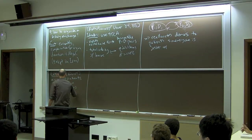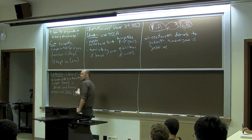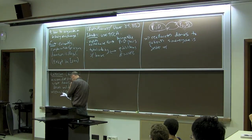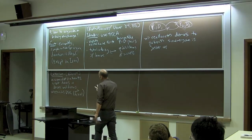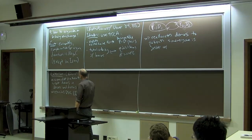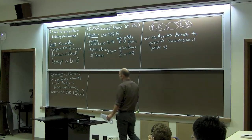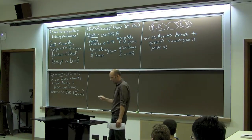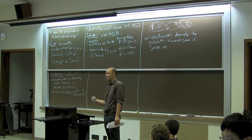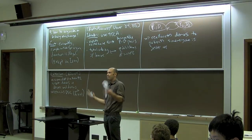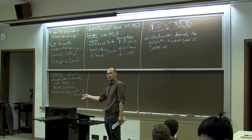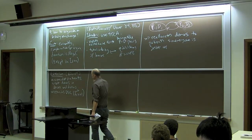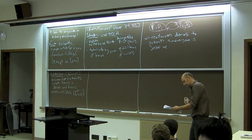Interestingly, the algorithm used for this extension had already been worked out for a totally different problem about six years earlier: assigning students to dorms. You had incumbent students who could keep their current room, new freshmen with no initial room, and empty rooms left by graduates. That's exactly the same structure — incumbents, rooms available to anyone, and people with no room — and they realized the algorithm also made sense in the kidney exchange context.